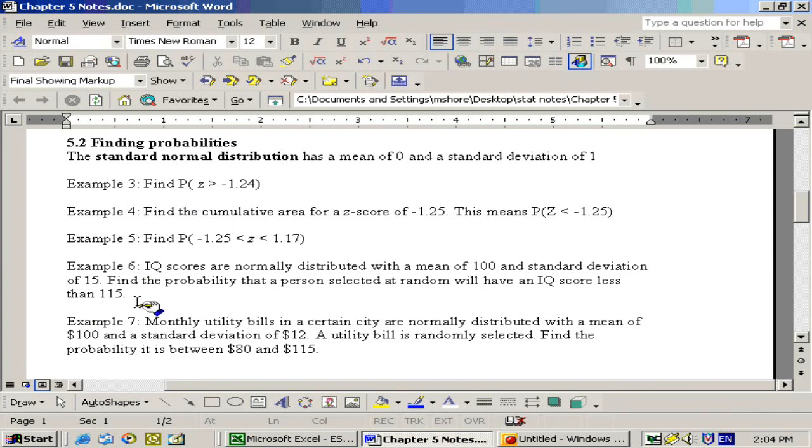Okay, now, numbers 6 and 7 is where you have to think a little bit. On number 6, it says IQ scores are normally distributed with a mean of 100, so the mu is 100, standard deviation of 15. It says find the probability that a person selected at random will have an IQ score less than 115. You could work out the z-score here for this. This is the person's score, X is 115, the mean is 100, and the sigma is 15.